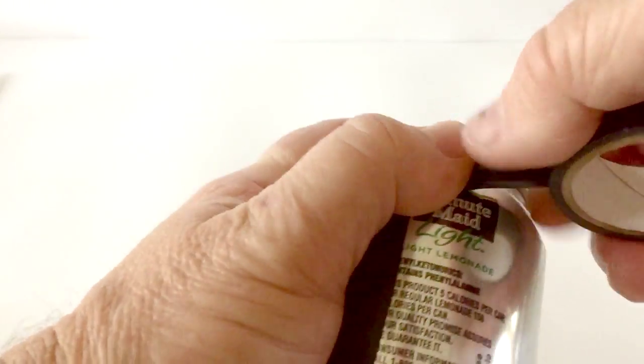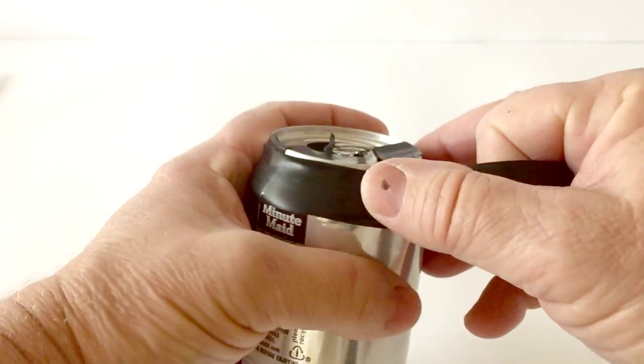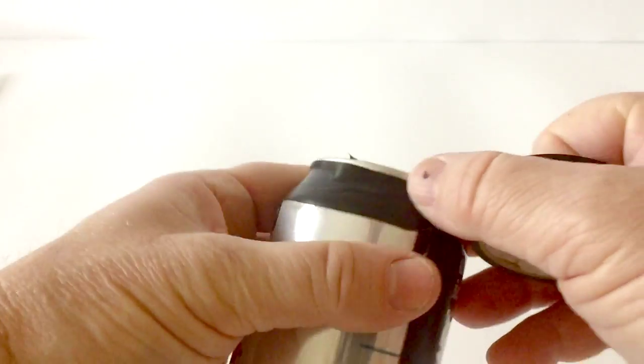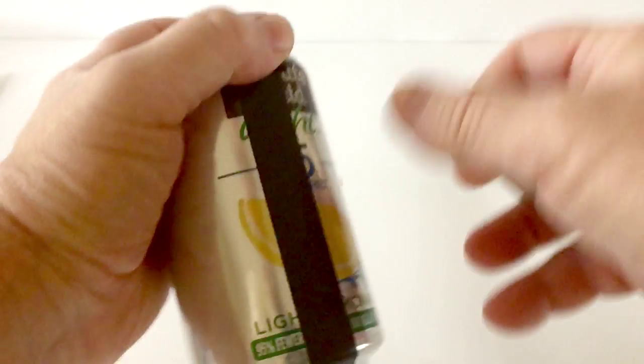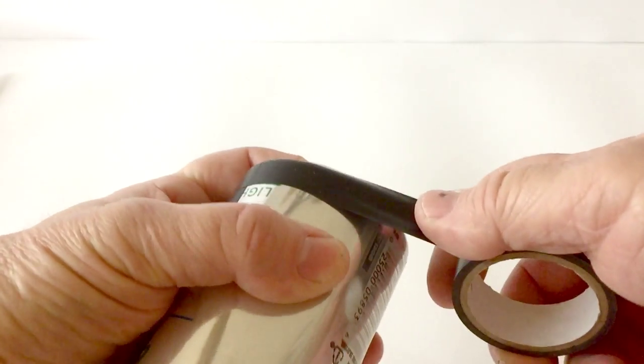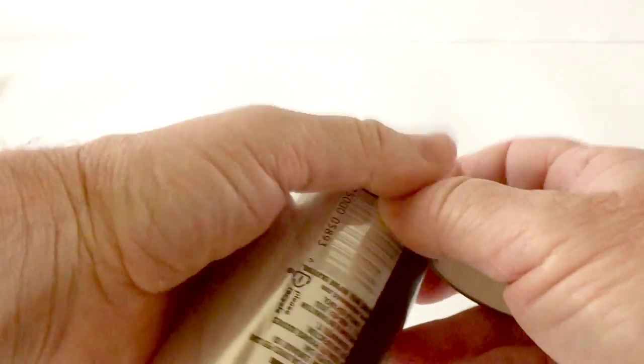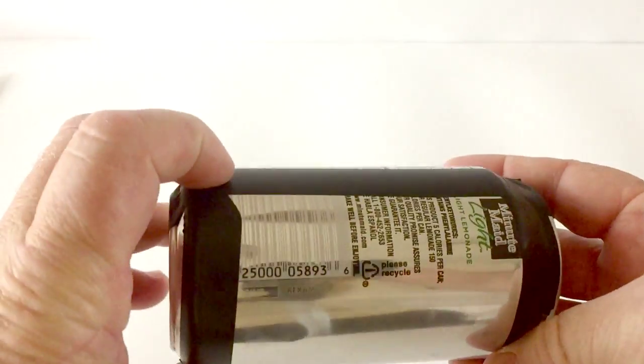Now we're going to take the electrical tape on the top part of the can and go from one side of the tape to the other side about halfway around. Once we get that, rip the tape and then do the same exact thing on the bottom part of the can so it ends up looking like this right here.